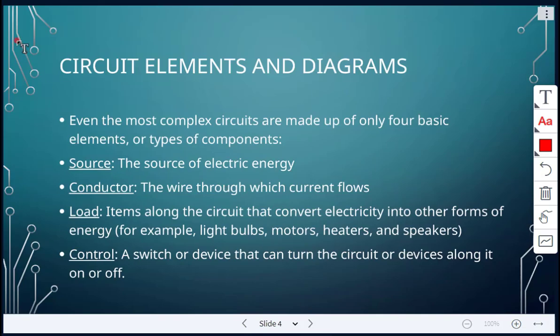And next we're going to look at circuit elements and diagrams. So circuits are made up of these four basic elements. There has to be a source, which is the source of electrical energy like a battery. There has to be a conductor, so this would be the wiring through which the current flows. A good conducting material like metal, like copper.